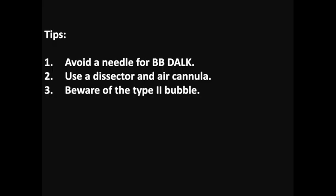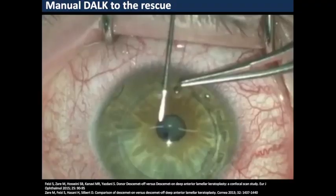A few tips when performing big bubble DALK: avoid using a needle. The video shown earlier was from many years ago; I have now switched to a dissector technique. There are many dissectors available on the market — Fogla, Tan, or Scornicola — and an air cannula injector can perform much easier pneumodissection. I stress again: be aware of the type 2 bubble because it has a much higher chance of intraoperative perforation.